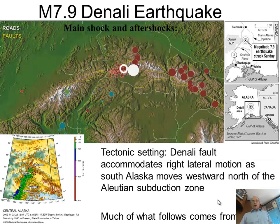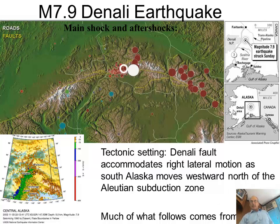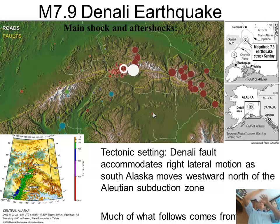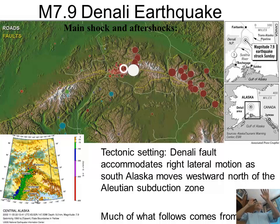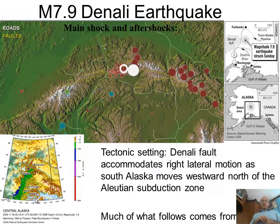The Denali earthquake occurred in Alaska — a magnitude 7.9 earthquake on the Denali fault. It was a big stretch of fault, almost a plate boundary in the interior of Alaska. It's a right-lateral fault, letting southern Alaska move to the west while northern Alaska stays fixed. This is because of a microplate that collides in southern Alaska, driving southwestern Alaska to the west and producing localized deformation in the interior.